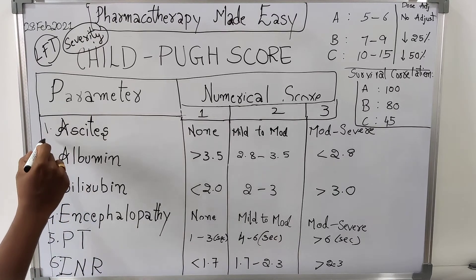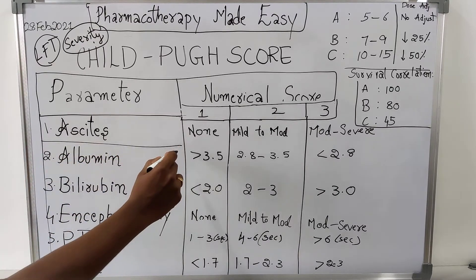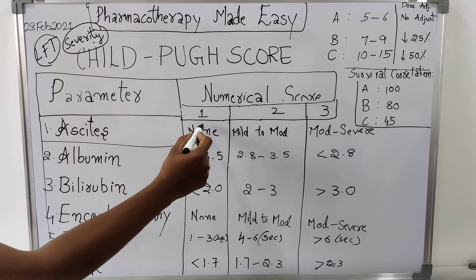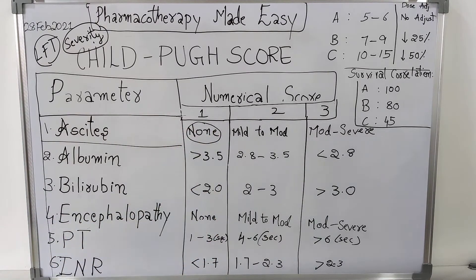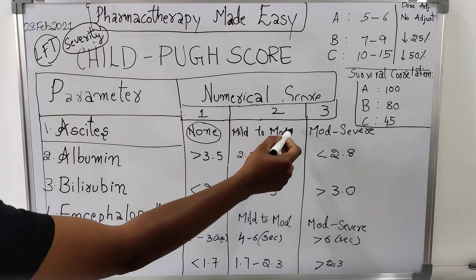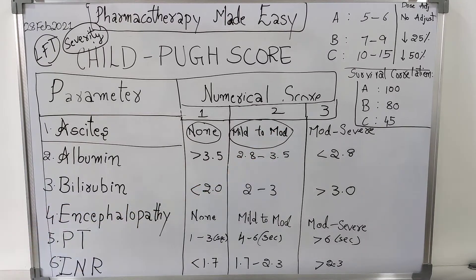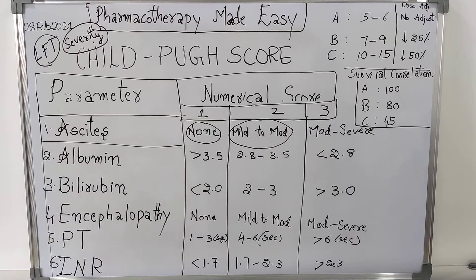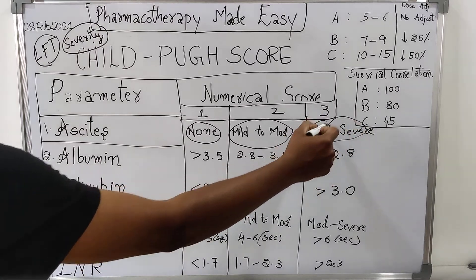If the patient does not have any ascites, the score will be 1 since it is none. If patient is having mild to moderate ascites, the score given will be 2, and if the ascites is severe, score given will be 3.